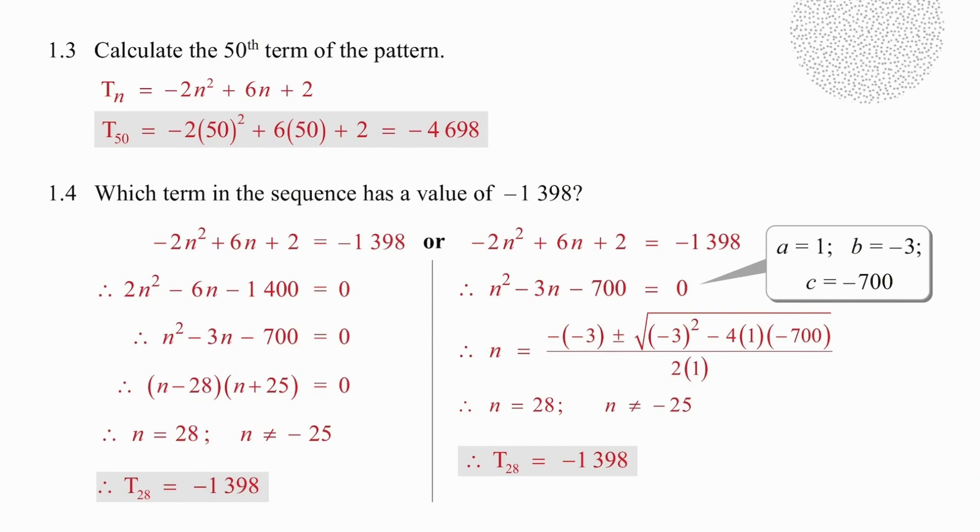To work out the 50th term, we take the value of 50 and replace n in the formula with 50, and calculate that the 50th term has a value of minus 4,698.